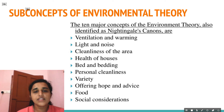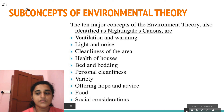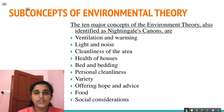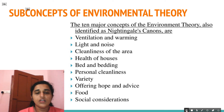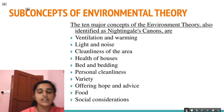The sub-concepts of the environmental theory include 10 major concepts, also identified as Nightingale's canons. First, ventilation and warming. Second, light and noise. Third, cleanliness of the area. Fourth, health of houses. Fifth, bed and bedding. Sixth, personal cleanliness. Seventh, variety. Eighth, offering hope and advice. Ninth, food. Tenth, social considerations. We will see each one by one.